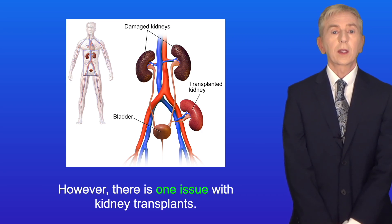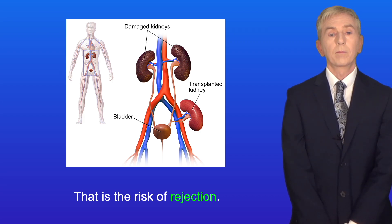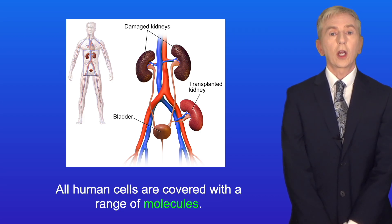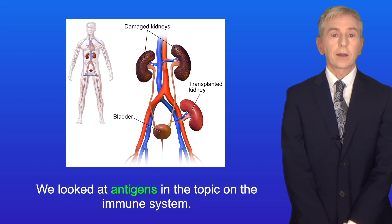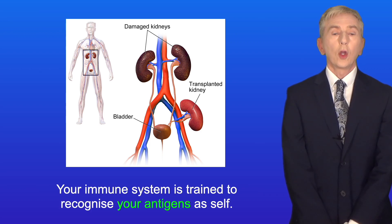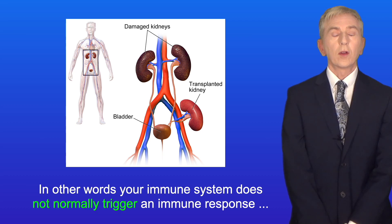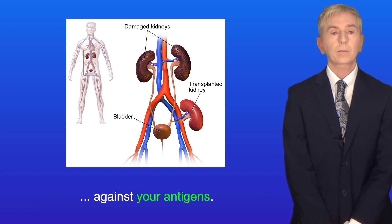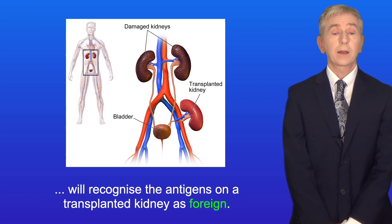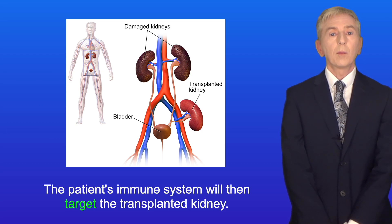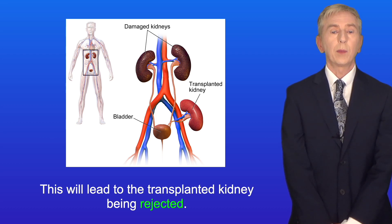However, there is one issue with kidney transplants and that is the risk of rejection. All human cells are covered with a range of molecules. Scientists call these antigens, which we looked at in the topic on the immune system. Your immune system is trained to recognize your antigens as self — in other words, it does not normally trigger an immune response against your own antigens. However, a patient's immune system will recognize the antigens on a transplanted kidney as foreign, and will target it, leading to the transplanted kidney being rejected.